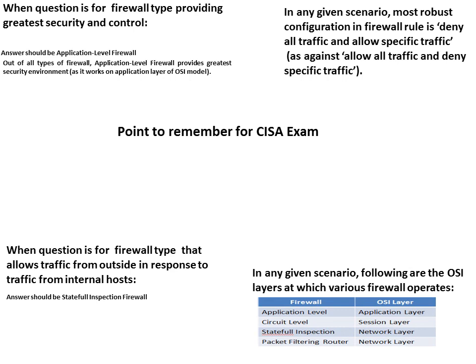These are the various OSI layers at which each firewall type works: application level works at the application layer, circuit level at the session layer, and stateful and packet filtering at the network layer.